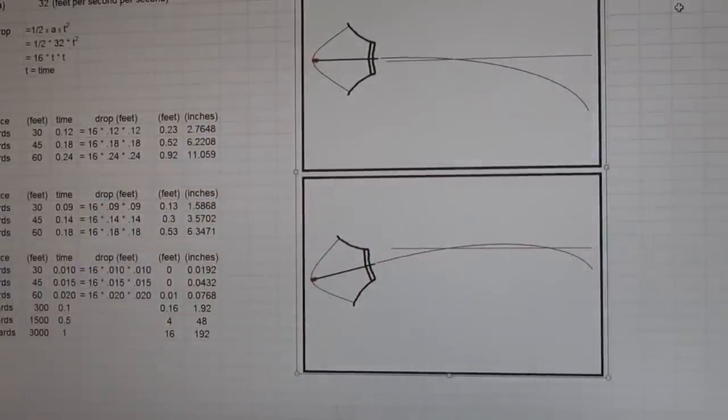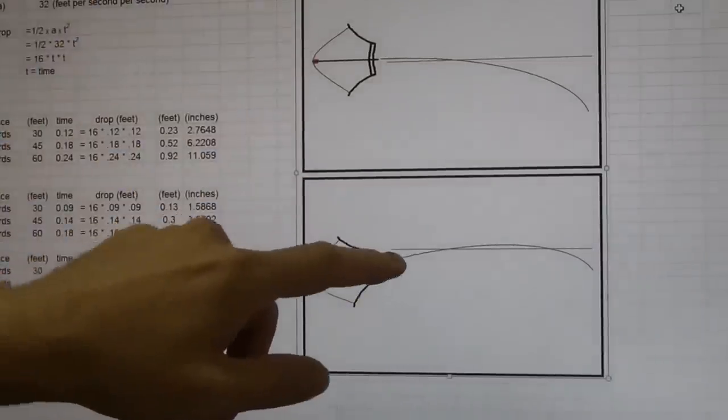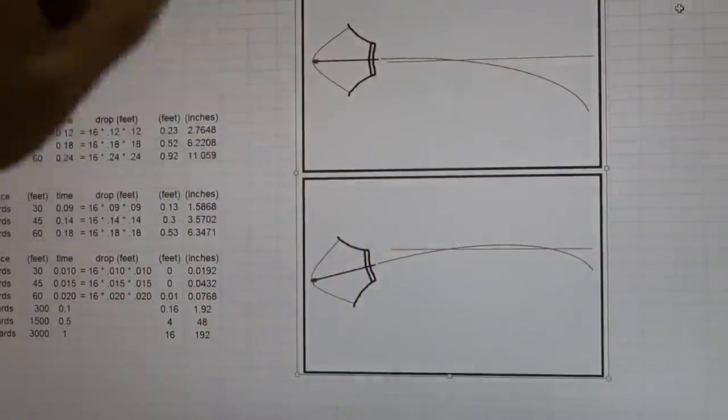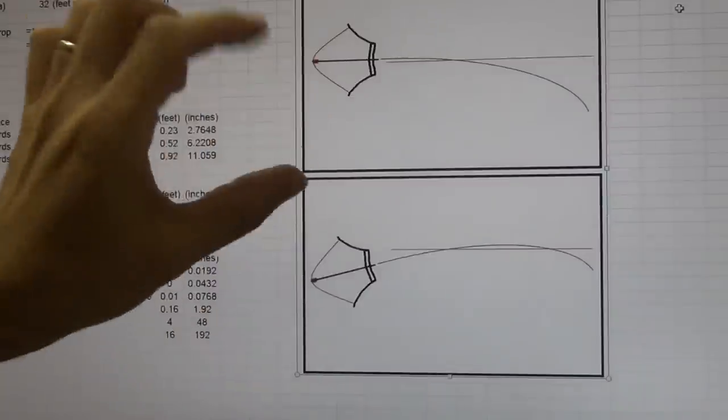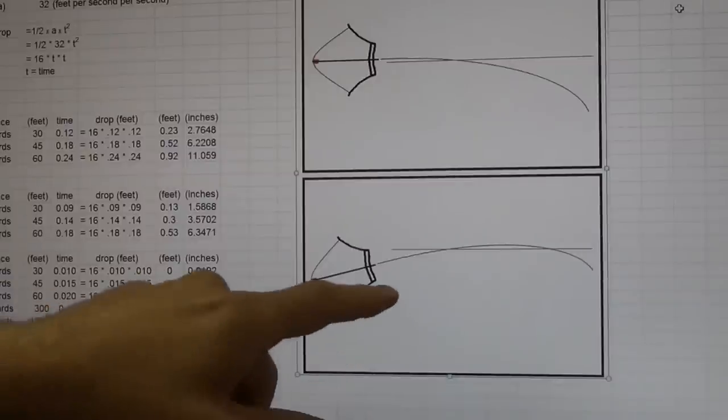And if you know anything about rifles, they do the same thing. That's why you can actually have, if you have your, depending on how you have your thing sighted in, you can actually hit, you'll have a, depending on how you've got your, what do you call it, your scope height above your bore, rifle bore, you can change things a lot. Well, this can do the same thing.